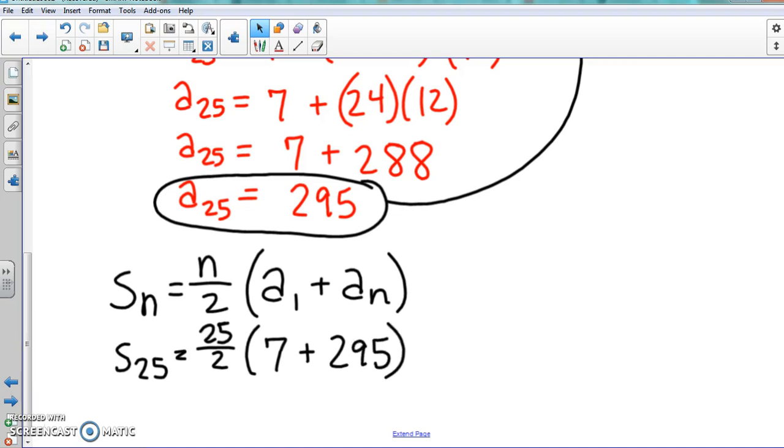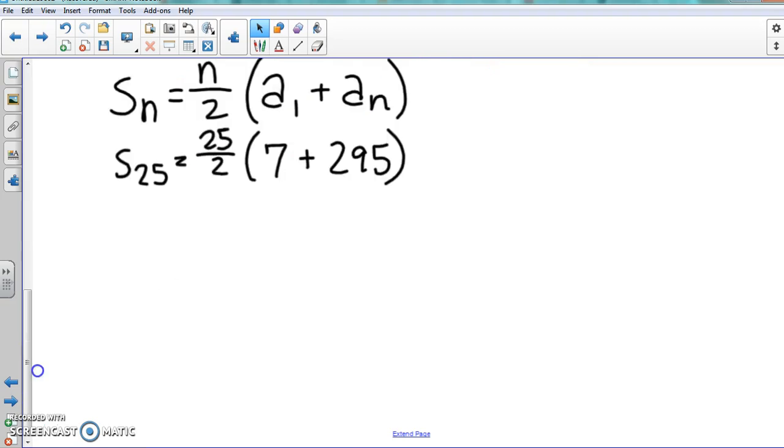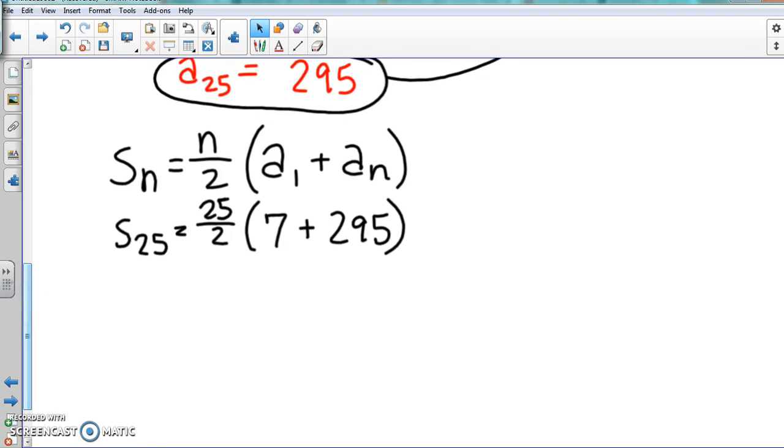So n we said again was 25, a_1 was 7, and a_n we said was 295. We're going to combine like terms here inside our parentheses - parentheses first. So if we add that together, what would that give us?